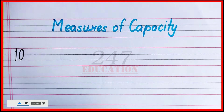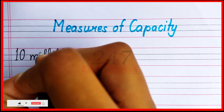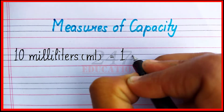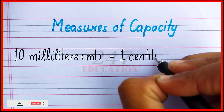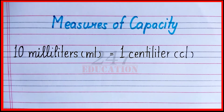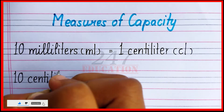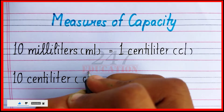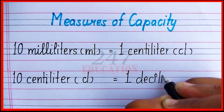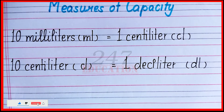10 milliliters equal to 1 centiliter. 10 centiliters equal to 1 deciliter.